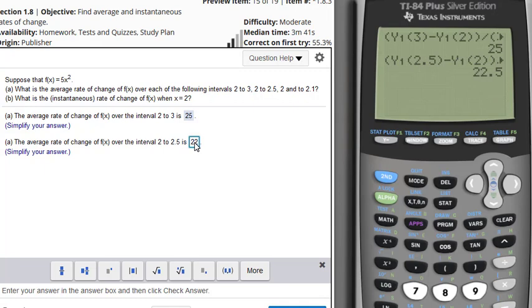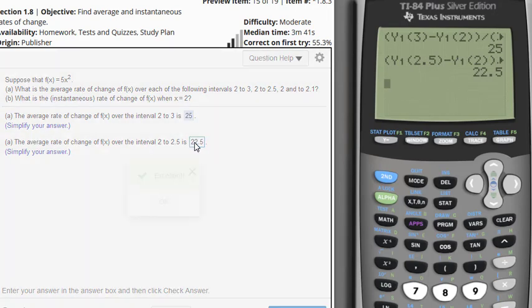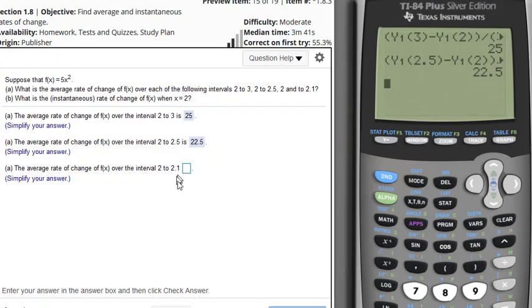This is a really good calculator method for finding average rates of change back to back to back if they're making you plug them in simultaneously—the same function for multiple ones. Especially on these types of problems that show you as you decrease toward the instantaneous rate of change, it's good to have this Y-VARS feature for easy working it out.